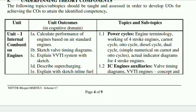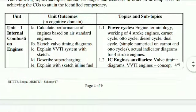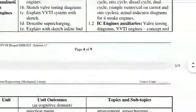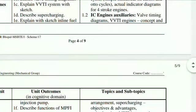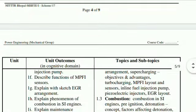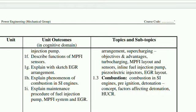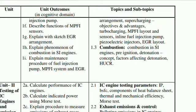The second point in Unit 1 is IC engine auxiliaries: valve timing diagrams, VVTI engines (variable valve timing concept and arrangement), supercharging with its objectives and advantages, turbocharging, MPFI layout and sensors (multi-point fuel injection system), in-line fuel injection pumps, piezoelectric injectors, and exhaust gas recirculation (EGR) layout. The third point covers combustion in SI engines: pre-ignition, detonation concept, and factors affecting detonation.